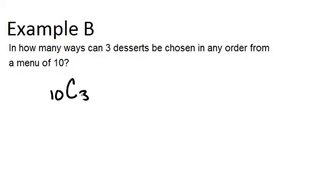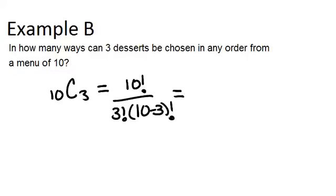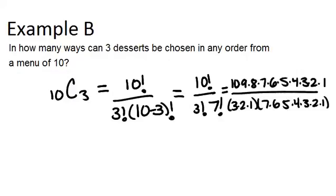To calculate this, let's use the second method from Example A. We'll do 10 factorial over 3 factorial times 10 minus 3 factorial. So 10 minus 3 factorial is just 7 factorial, and we can rewrite it that way. Once you expand it out, the 7 factorial cancels on the top and bottom, and we're left with 10 times 9 times 8 divided by 3 times 2 times 1, which ends up being 120.